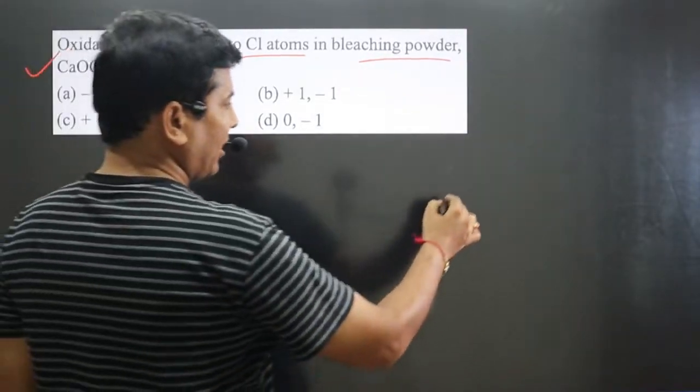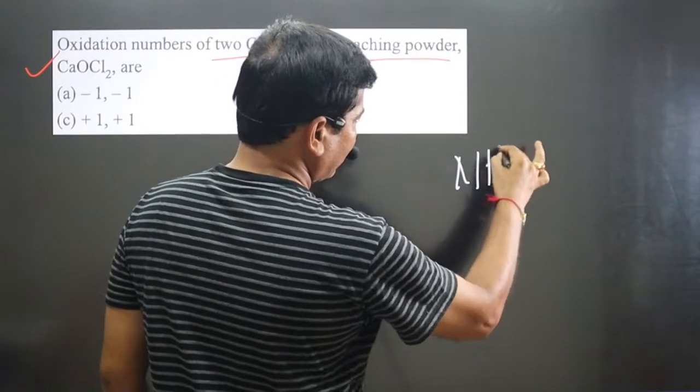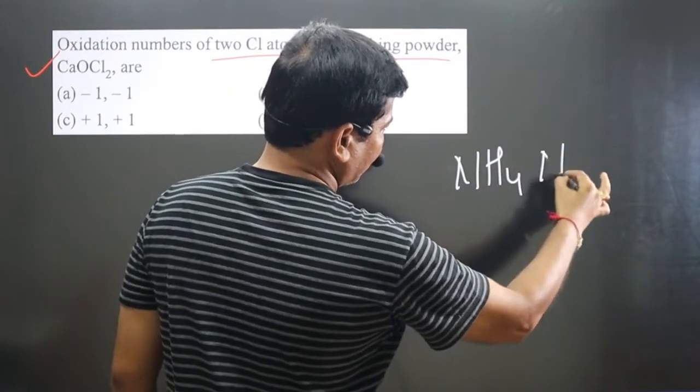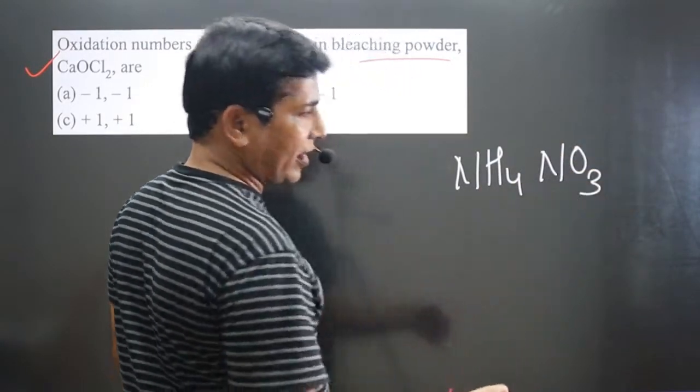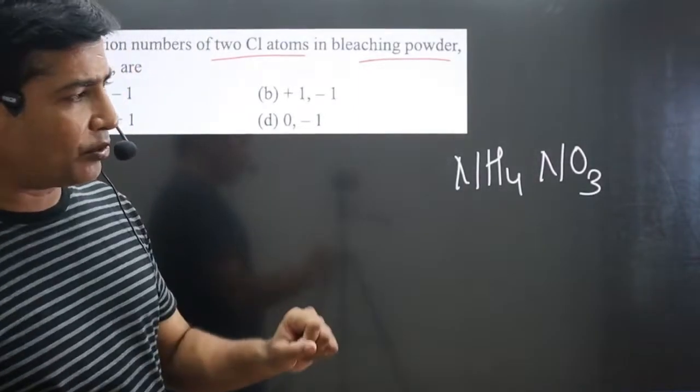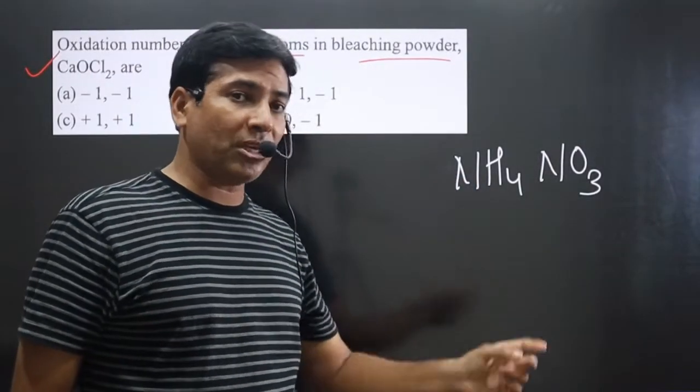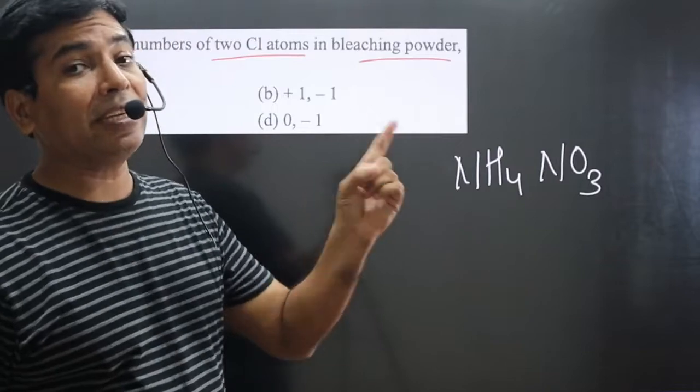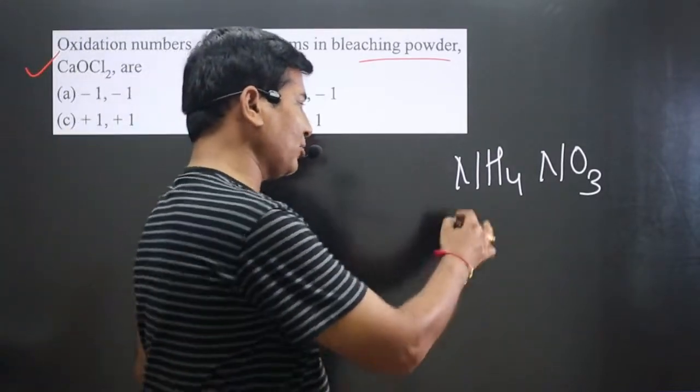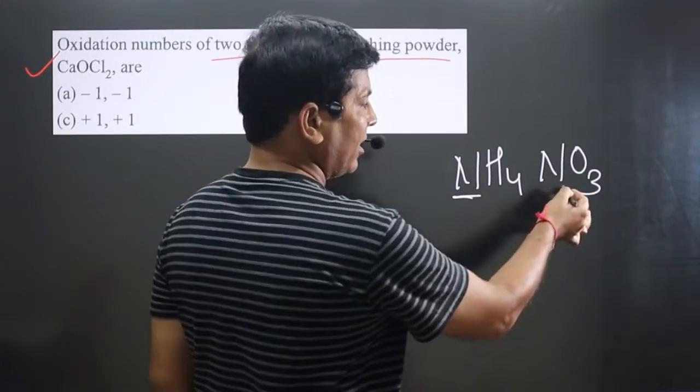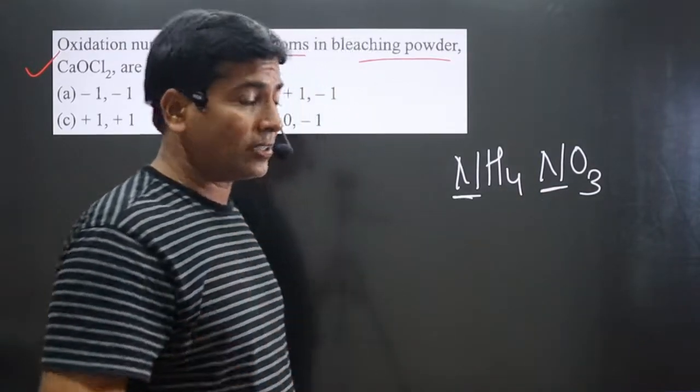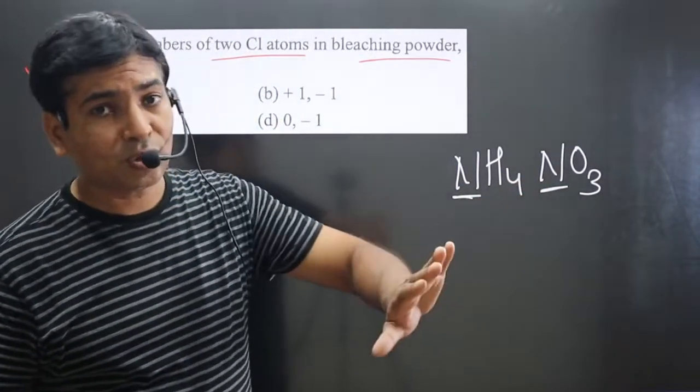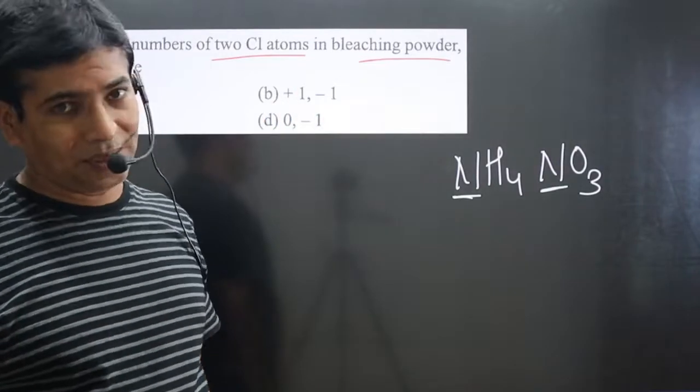For example, if I mention ammonium nitrate, and the question is asking to calculate oxidation number of nitrogen, you can see there are two nitrogen, but each nitrogen is present in different environment. This nitrogen is attached to four hydrogen, but this nitrogen is attached to three oxygen. That's why each nitrogen will show different oxidation numbers.